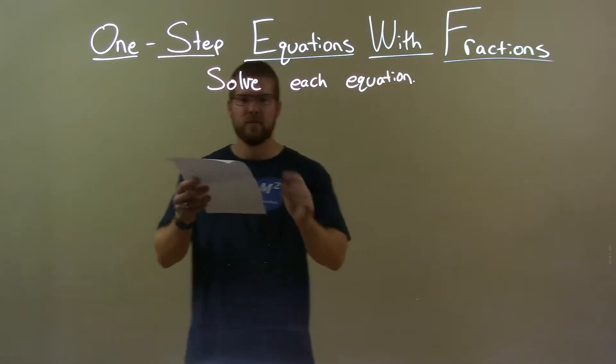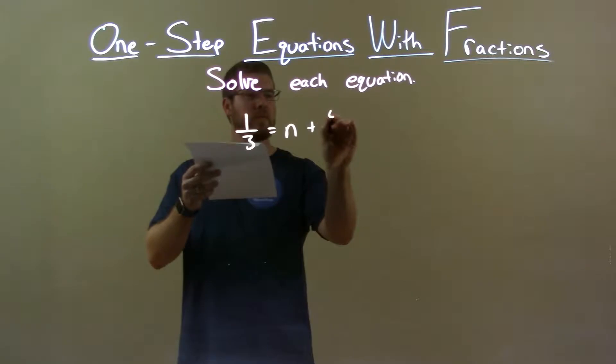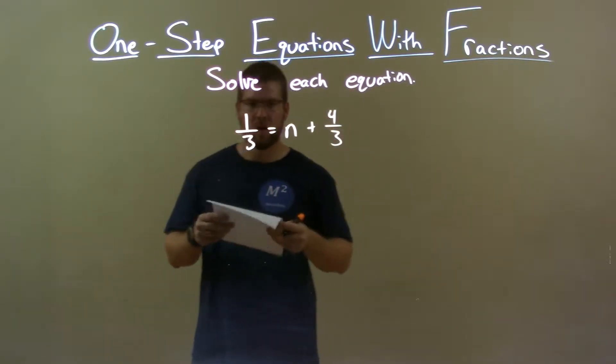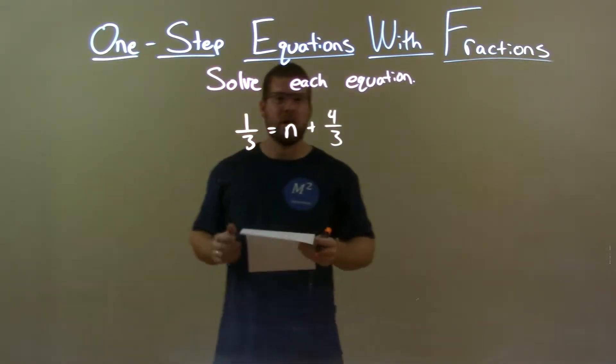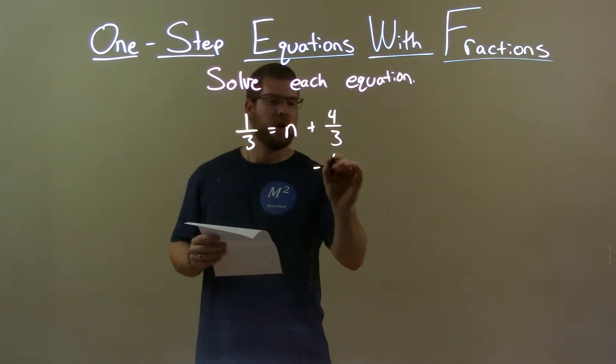If I was given this equation, one-third equals n plus four-thirds. Alright. Well, I want to get n by itself, so to do that, I want to subtract four-thirds from both sides.